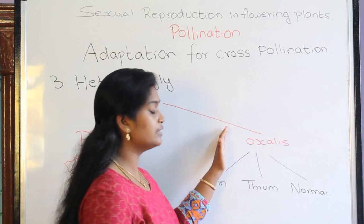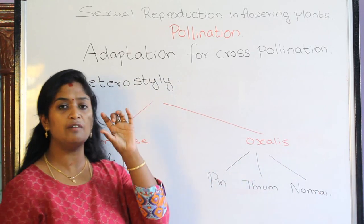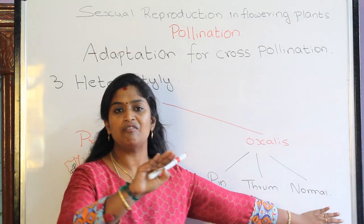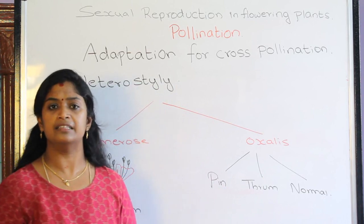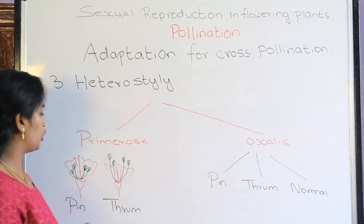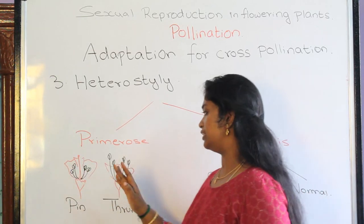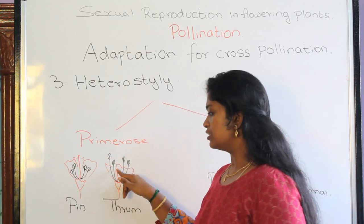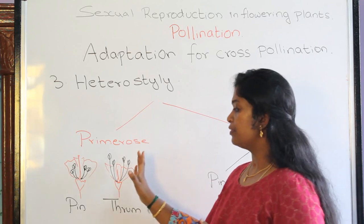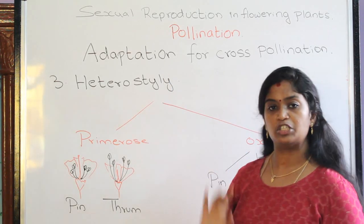In oxalis, there are three different types of flowers: pin, thrum, and normal. In pin we have short filament and long style; in thrum we have long filament and short style; in normal we have equal length of filament and style. In the pin condition, the stigma is exposed to the external environment, so any external agency can bring pollen and aid fertilization. In thrum, the anthers are exposed and the stigma is enclosed inside the flower; the pollen grains are carried by the external agency to the stigma of another flower on another plant.